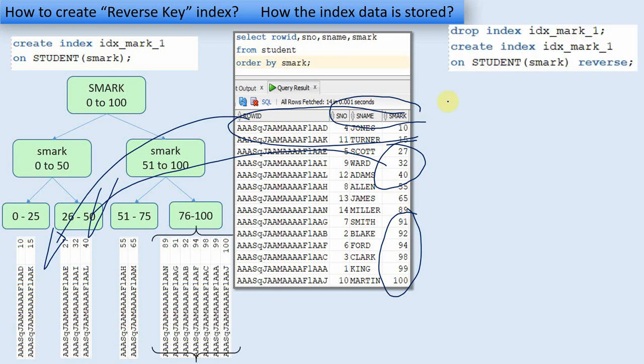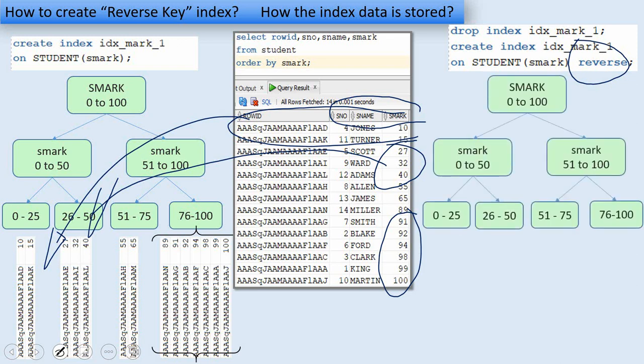The syntax is very similar to the B-tree except that there is a keyword called REVERSE at the end of the create index statement. The moment we create the reverse key index by specifying this REVERSE keyword,